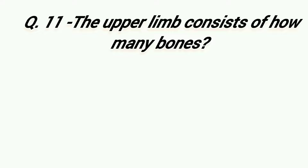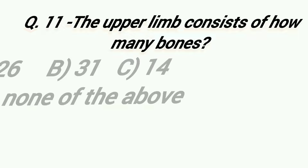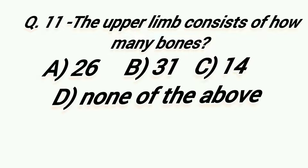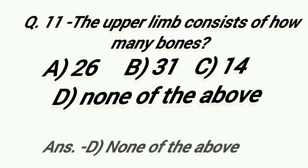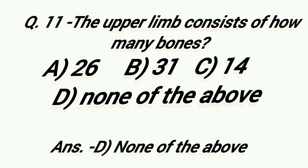The upper limb consists of how many bones? Option A: 26, Option B: 31, Option C: 14, Option D: None of the above. Right answer is Option D, None of the above.